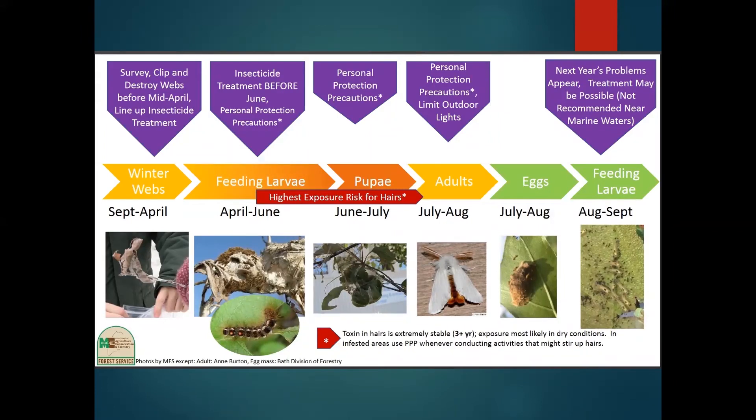This is just a summary of the life cycle — it's available online on our website. The takeaway is that basically mid-April through the end of July is the worst time for the hairs.